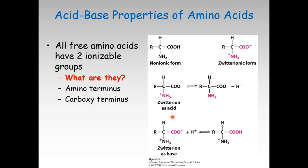A zwitterion can function as an acid when NH3+ loses a proton and NH2 is not protonated. A zwitterion acts as a base when NH3 is protonated and COOH is not protonated.